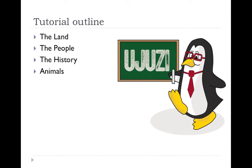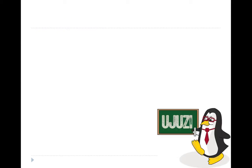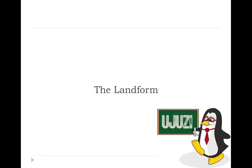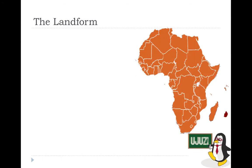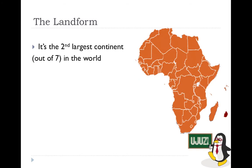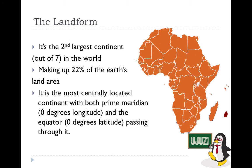Africa is actually the second biggest continent in the world. Of course there are seven continents, and Africa is actually the second largest of all of them. It makes up 22% of the earth's landmass, which is quite a lot.